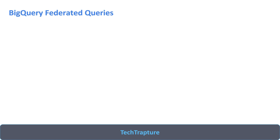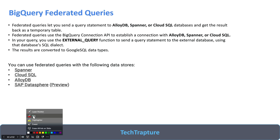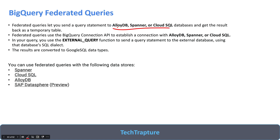So what is a federated query? A federated query lets you send a query statement to AlloyDB, Spanner, or Cloud SQL databases and get the result back as a temporary table. In simple terms, federated query in BigQuery means you can execute queries in BigQuery on these external databases — you can execute queries on AlloyDB data, on Spanner data, or on data in a Cloud SQL database.